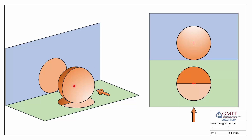We have a specific name for this rim and it's known as the extreme generator. The extreme generator is the outermost part of our solid that is going to determine the outline that we see for whichever view we're going to be looking at — that's our extreme generator.